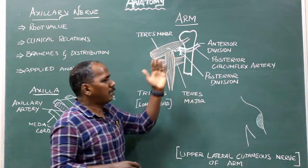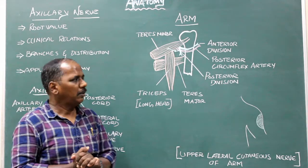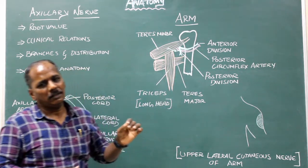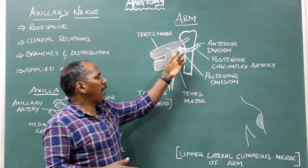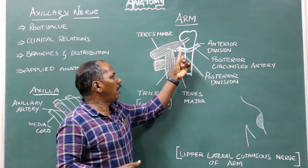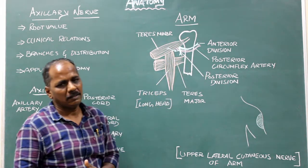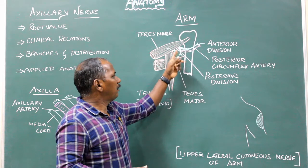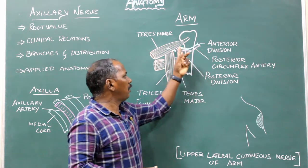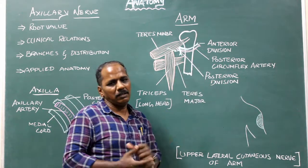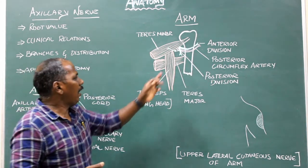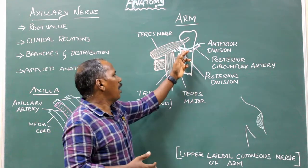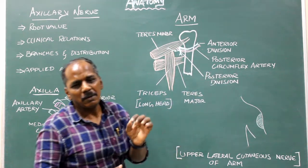In the quadrangular space, the axillary nerve enters the quadrangular space where it divides into anterior and posterior divisions. The anterior division of the axillary nerve is accompanied by the posterior circumflex humeral artery.